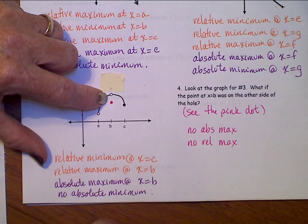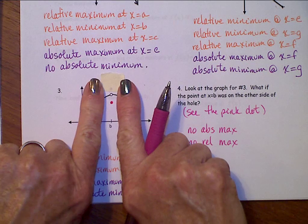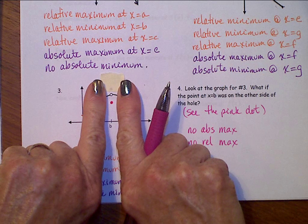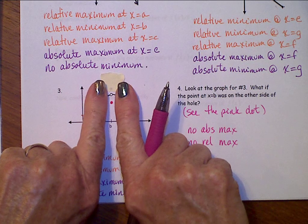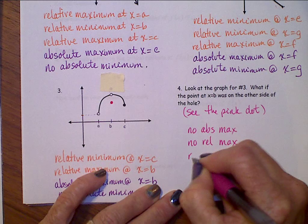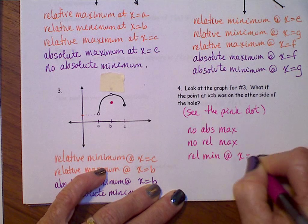That spot at b is no longer a relative maximum. However, that spot at b now, that is a relative minimum. Because we look in this section, that is the lowest y-value in that section. In that nearby area, that's the smallest y-value. So there is now a relative min at x equals b.